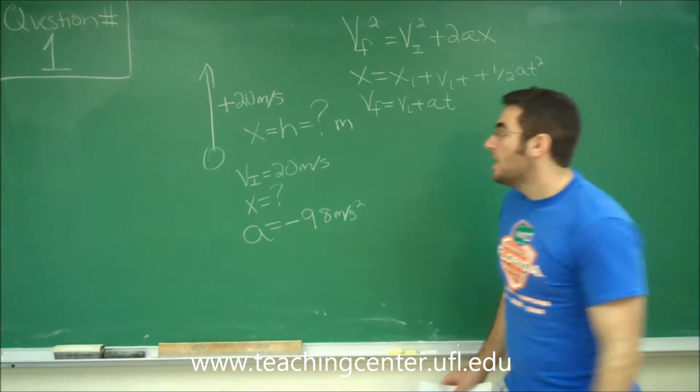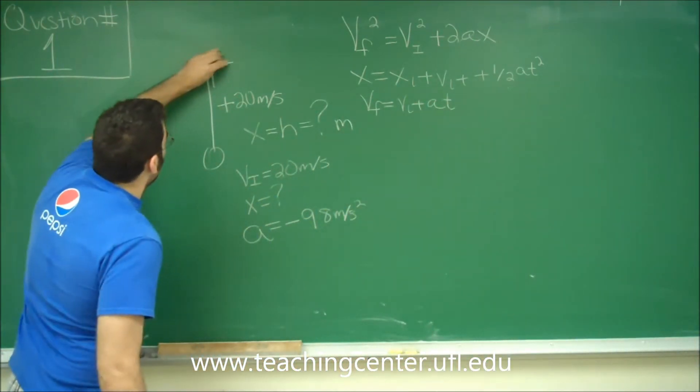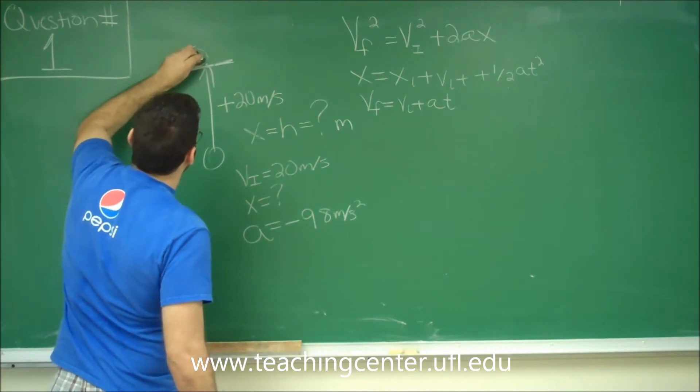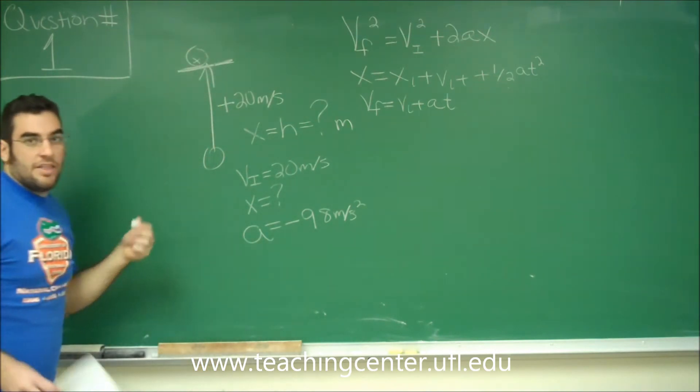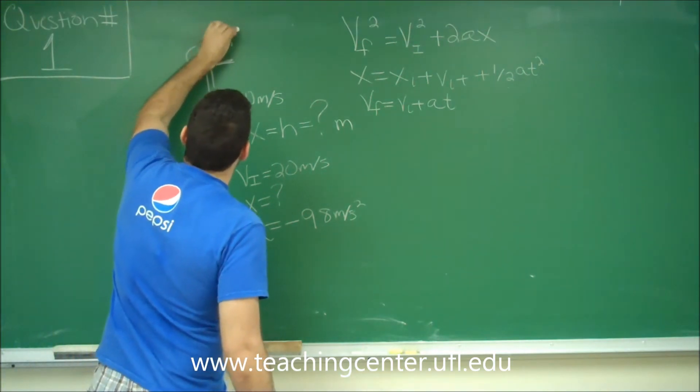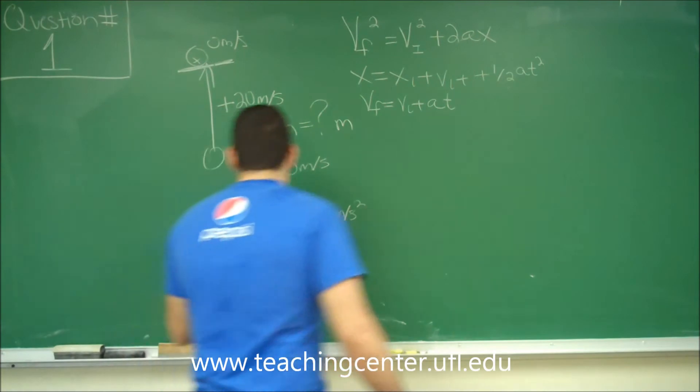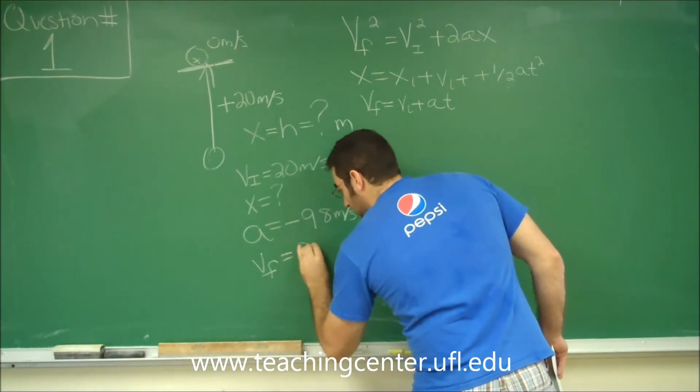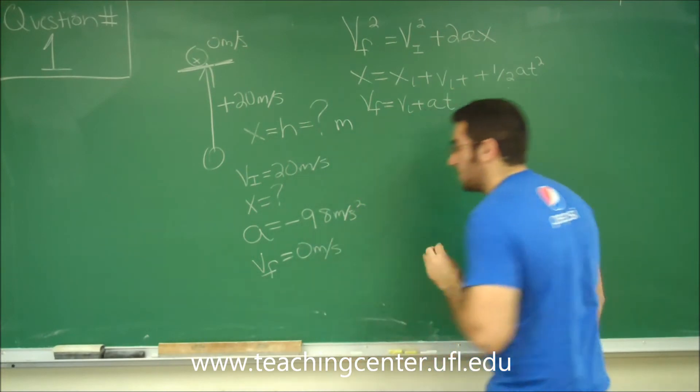And the last thing we know is when the ball hits the peak at the top of the trajectory, that the final velocity of the ball at the top is 0 meters per second. So now we know vf equals 0 meters per second.